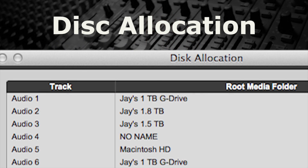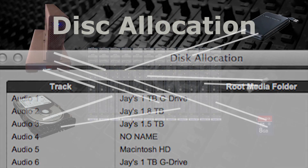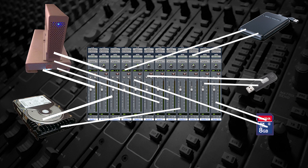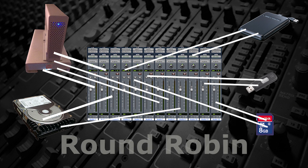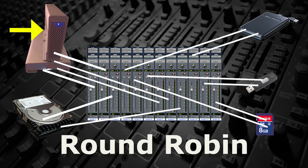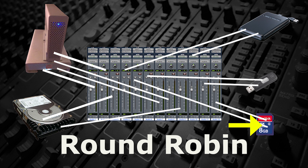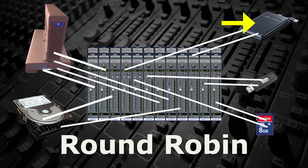Disk allocation is a way to manage what device is supplying the data for what track. Certain tracks can be assigned to certain media devices, or the tracks can use what's called a round-robin allocation, meaning that the data will automatically be distributed evenly to all usable devices connected to the DAW.